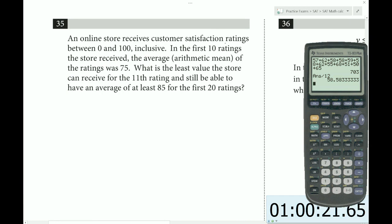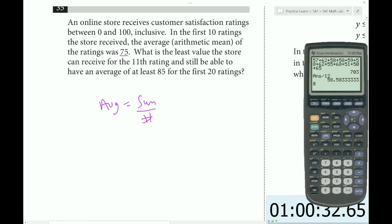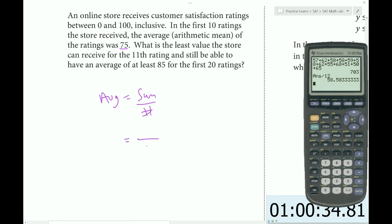An online store receives customer satisfaction ratings between 0 and 100 inclusive. In the first 10 ratings the store received, the average was 75. Whenever we see average, we do average equals sum over number. The number of ratings is 10, average is 75, so the sum equals 750. We'll store that away for later.